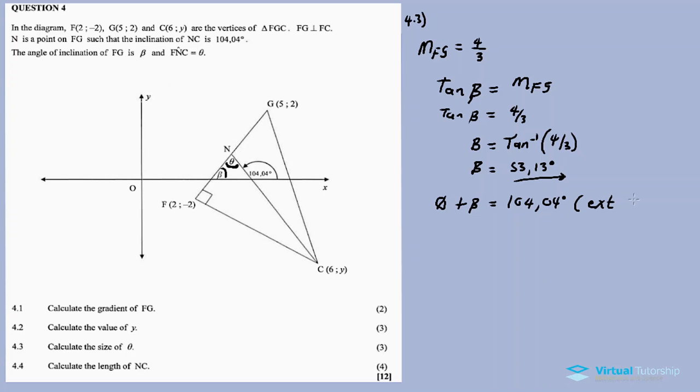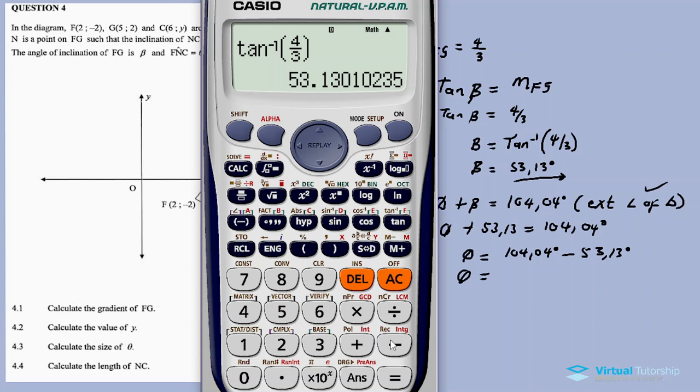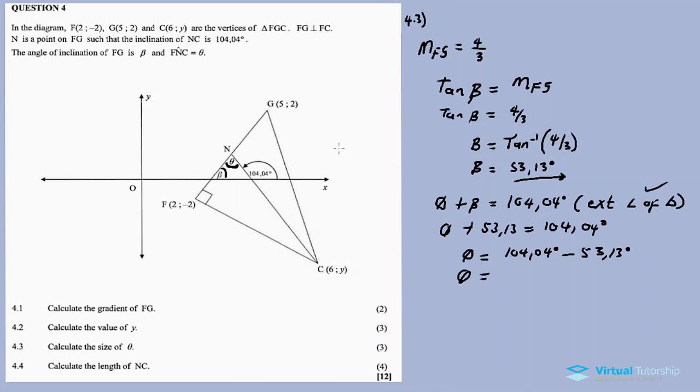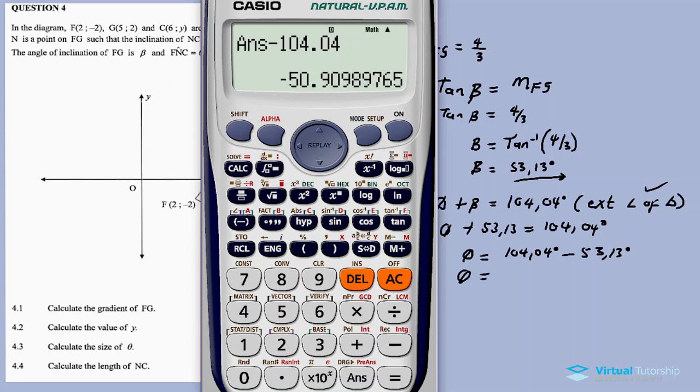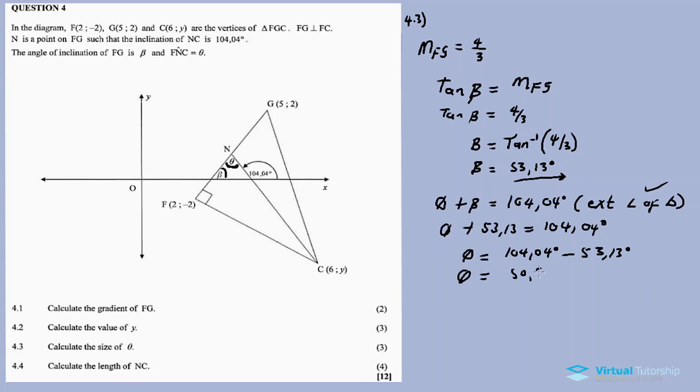Now using the property that theta plus angle beta equals 104.04 degrees, because this is an exterior angle of the triangle. We substitute and calculate theta. Beta is 53.13, so theta equals 104.04 degrees minus 53.13 degrees. Theta is equal to 50.91 degrees.